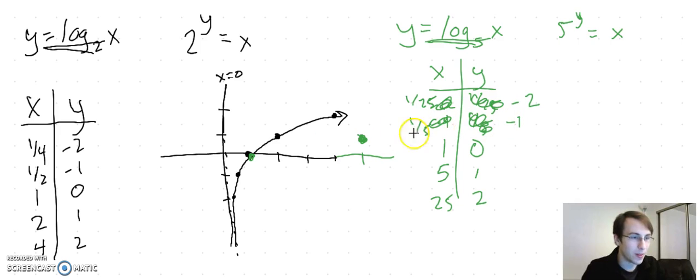So x is one fifth when y is negative one. When we plot this, it looks something like that.